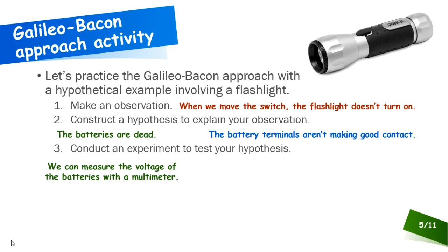If, however, your hypothesis was that the terminals aren't making good contact, then we can actually inspect the terminals for our experiment. We can inspect their contacts and see if there's anything that's interfering with the circuit, because we need a complete circuit in order for the electricity to run through and power the light bulb for the flashlight.